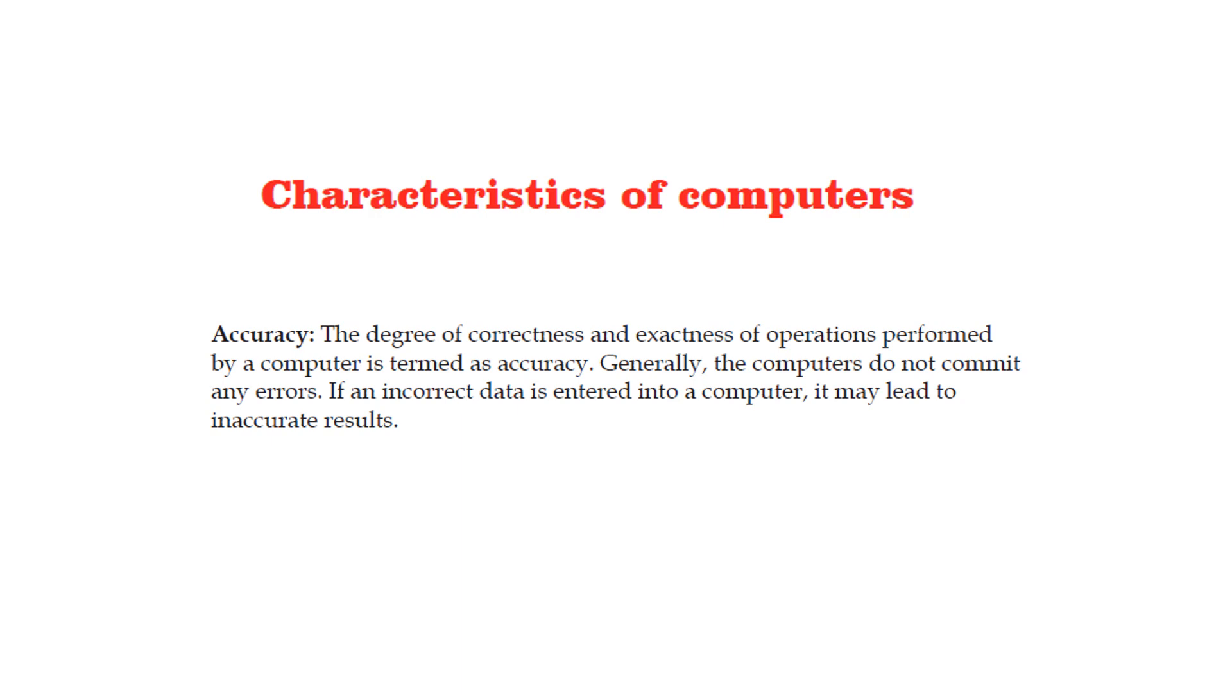Next, it's accuracy, which means the degree of correctness and exactness of operation performed by a computer. Generally, the computers do not commit any errors. If an incorrect data is entered into a computer, it may lead to inaccurate results. But otherwise, computer doesn't make mistakes.